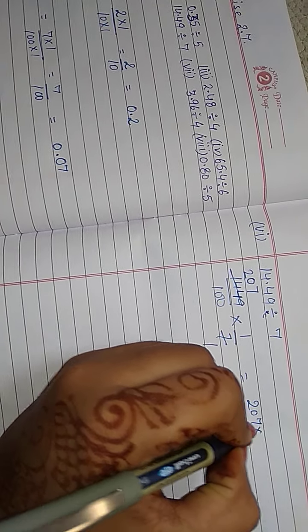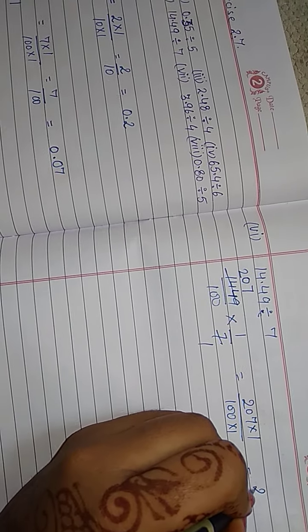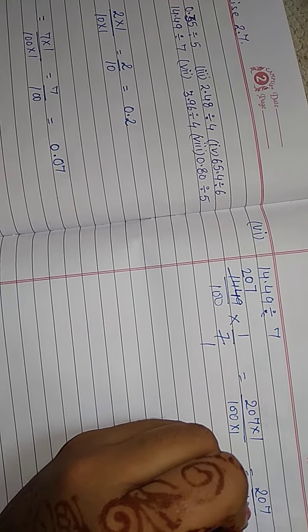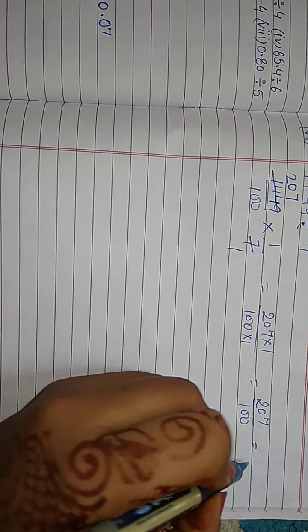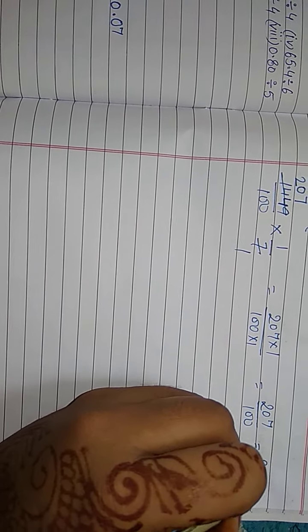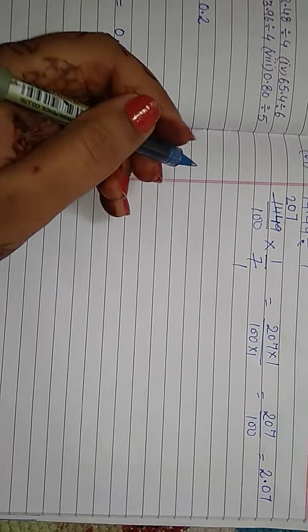Means, 207 into 1, 100 into 1. Then, you get 207 by 100. Place after 2 digit, decimal. 2 digit decimal. This is the answer of this part.